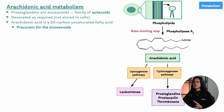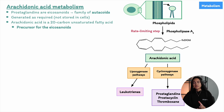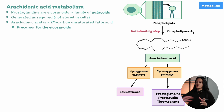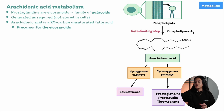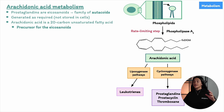The key takeaway here is that arachidonic acid is the starting point for various important molecules. The enzyme phospholipase A2 is responsible for releasing arachidonic acid from the membrane. Prostaglandins and thromboxanes are produced via the cyclooxygenase pathway, and leukotrienes are produced via the lipoxygenase pathway. This understanding sets the stage for us to explore these pathways and their products in more detail.